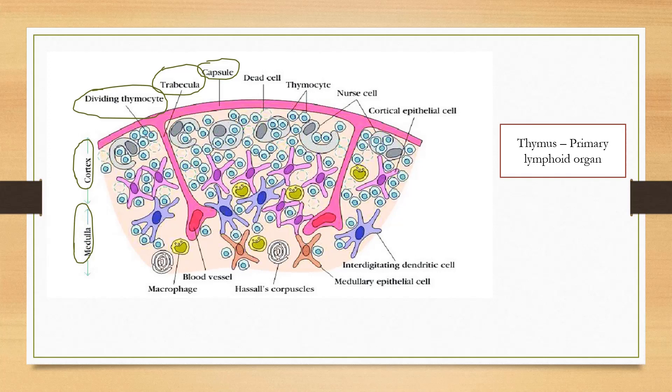In addition to thymocytes, thymus contains dendritic cells, macrophages, and epithelial cells.